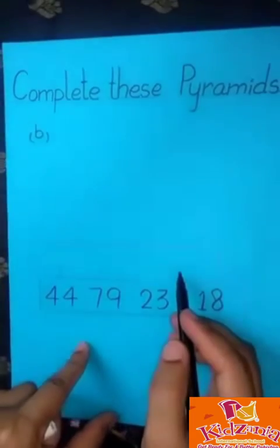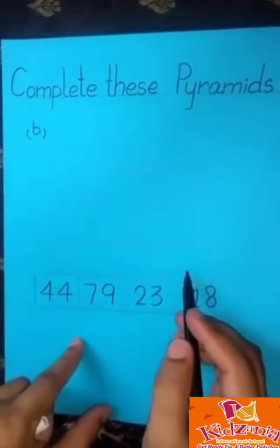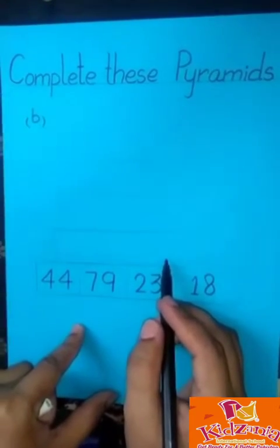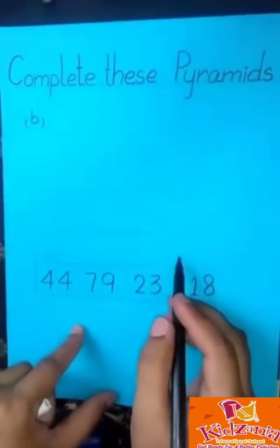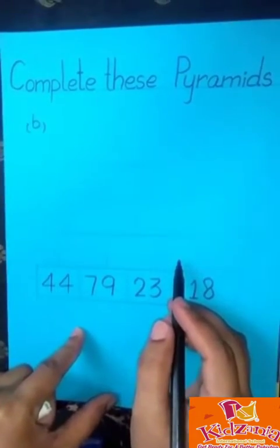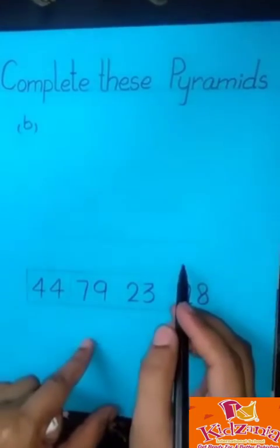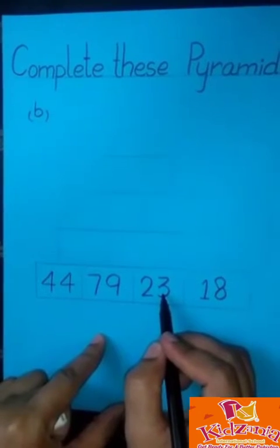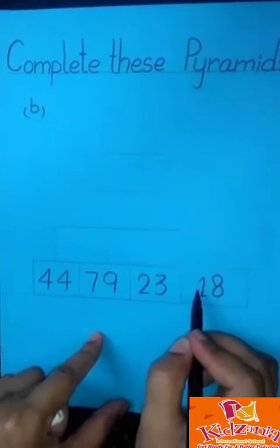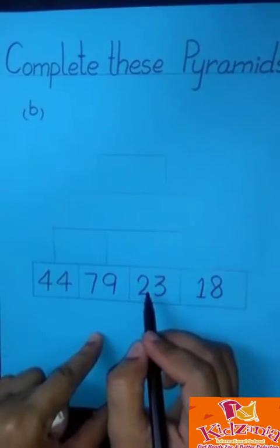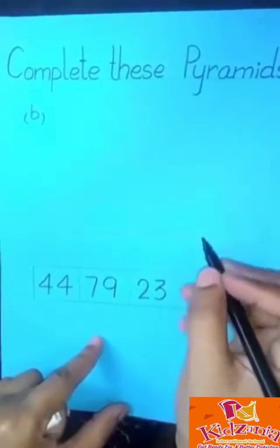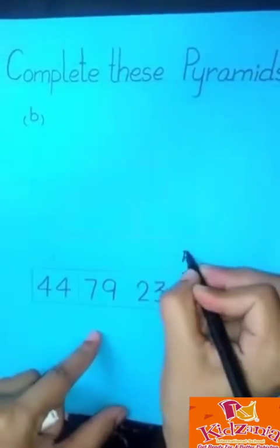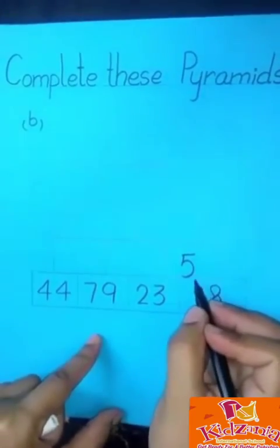We solve the 3rd row of this pyramid. In the 3rd row, there are 3 blank boxes. Now we fill the blank boxes with the right digit. How to solve the first box of this row? We subtract 23 by 18. When we subtract 23 by 18, we get the answer of 5. And we write the answer in this box.